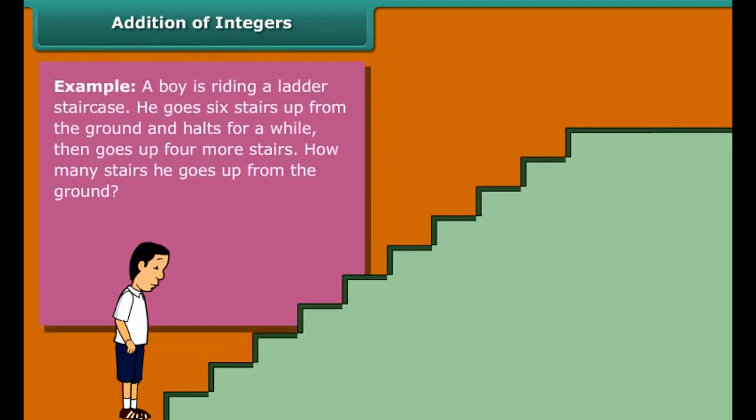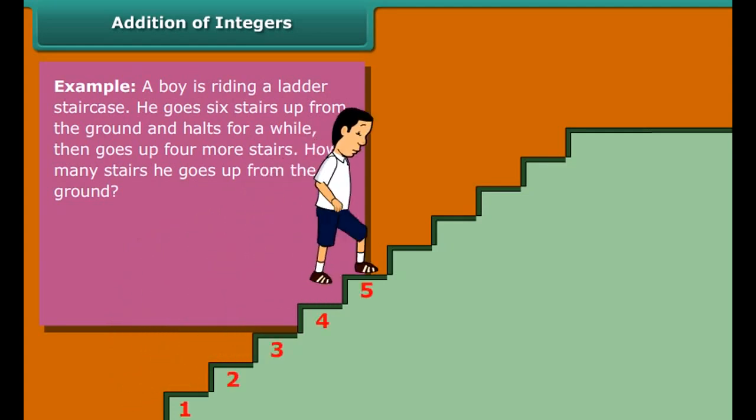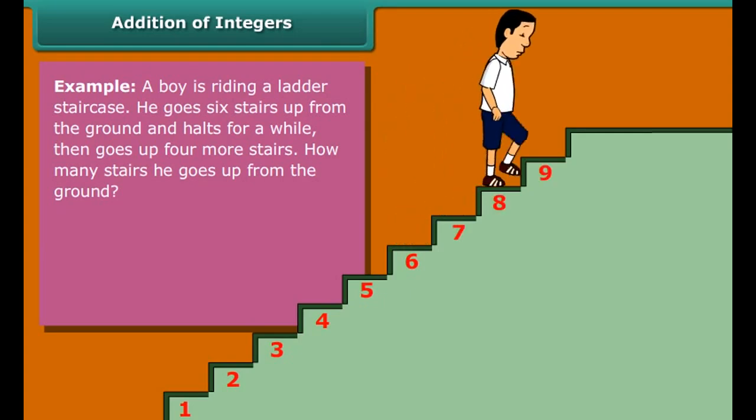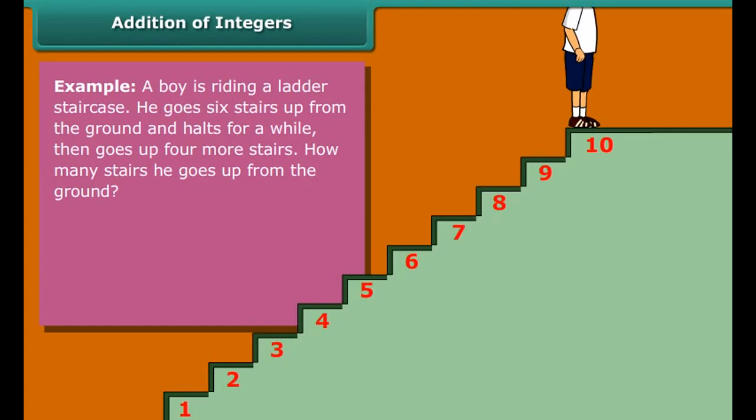Example: A boy is riding a ladder staircase. He goes six stairs up from the ground and holds for a while, then goes up four more stairs. How many stairs does he go up from the ground? Plus 6 plus 4 equals plus 10.